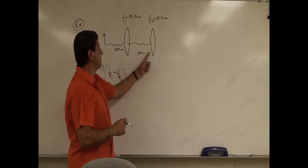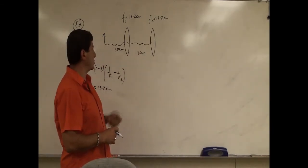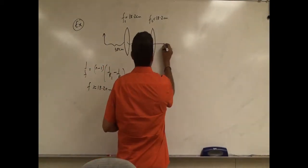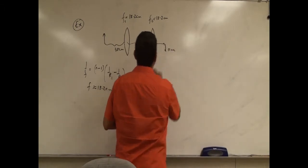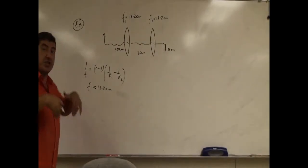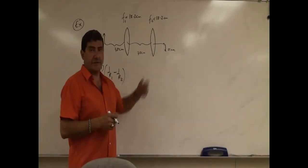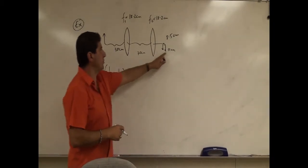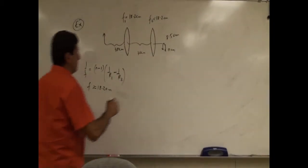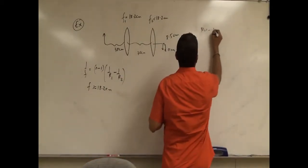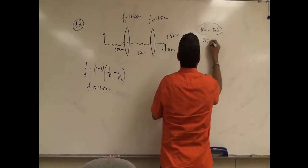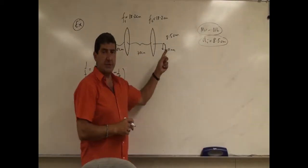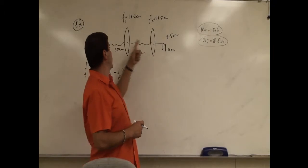I put the two lenses 30 centimeters apart from each other, and put a light source 30 centimeters away. The experimental image came out to be about 11 centimeters from the right side of the second lens. The theoretical calculation gave 8.5 centimeters to the right of the second lens — pretty close to the experiment. The magnification came out to be negative 0.816, meaning it was an inverted image at 81% of the size of the original object.